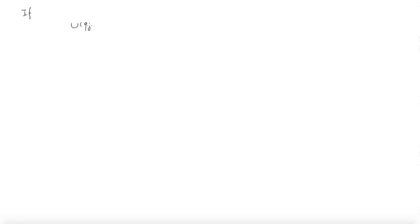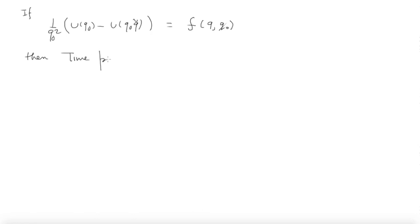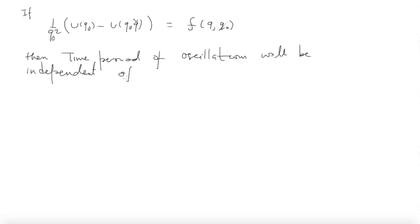Now, let us ask: is it possible to choose the potential energy such that T does not depend on Q₀? It is clear what we should do. If this entire expression is not a function of Q₀ — meaning the denominator (U(Q₀) − U(Q₀ Q̃)) × (1/Q₀²) is not a function of Q₀ — then the time period will be independent of the amplitude of oscillations.